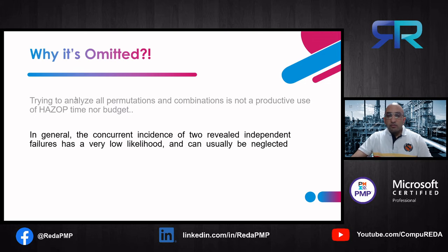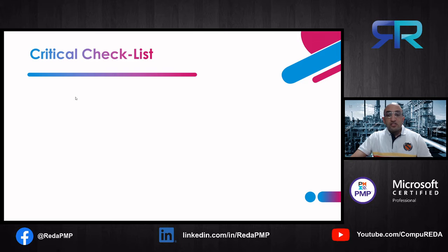But before you omit or neglect a concurrent instance, you have to pass through a critical checklist. Risks have several attributes, and we have to check three of those attributes before identifying two events as double jeopardy and thus omitting them from further analysis.